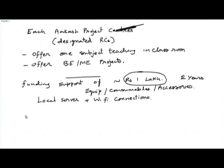Under that project, all remote centres — not only Aakash project centres but all remote centres participating in the workshop — will be funded to the tune of about rupees 3.5 to 4 lakhs each for building up the minimal infrastructure required to conduct proper workshops.